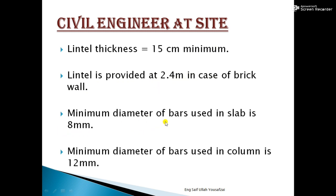The minimum diameter of bars used in a slab is 8 millimeters. When you are designing a slab, you should use a minimum bar diameter of 8 mm. The minimum diameter of bars used in a column is 12 millimeters — when designing a column, you should use bars of 12 mm or more.